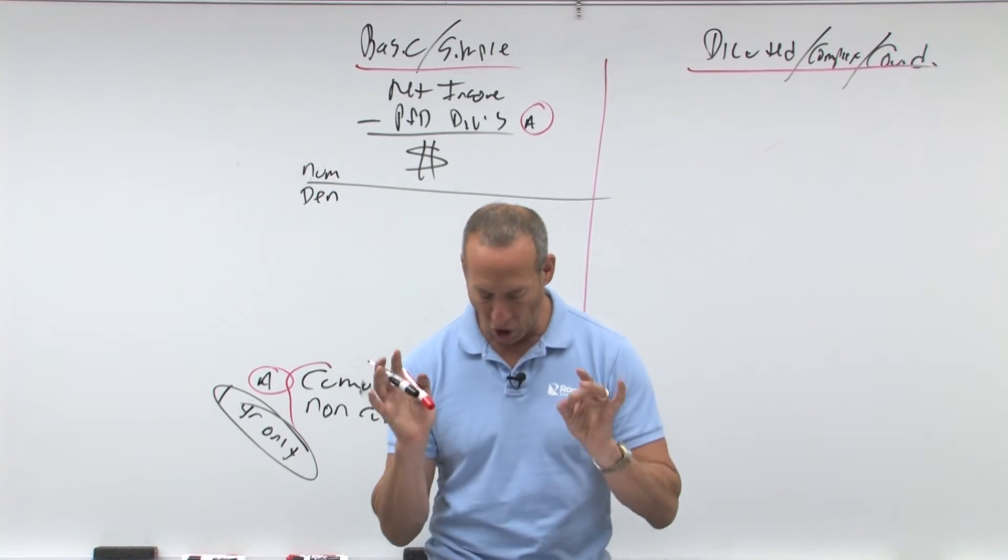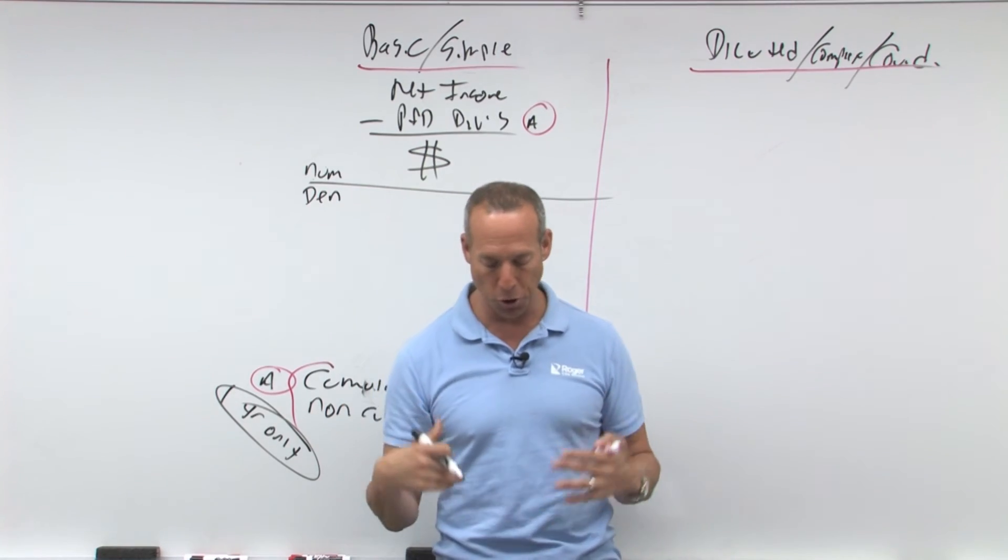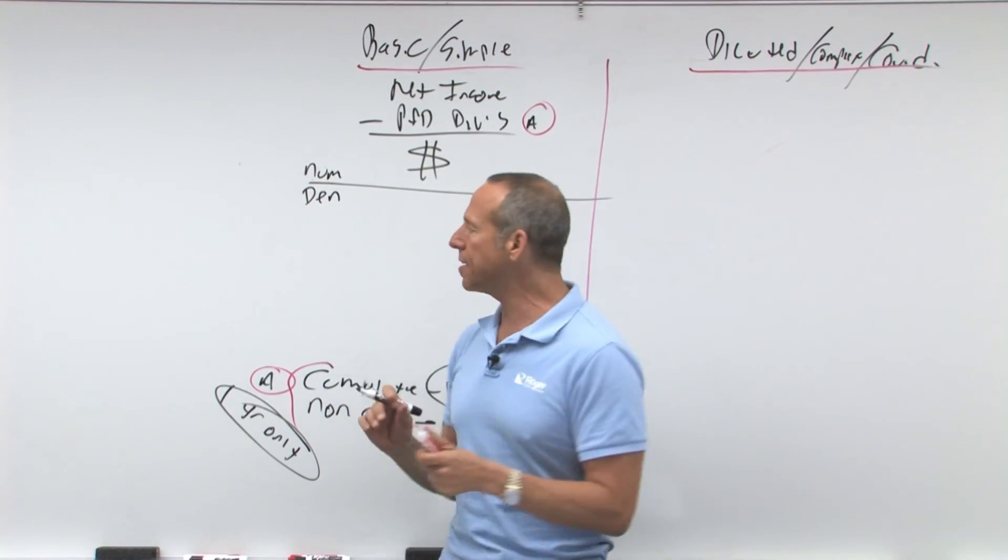So again, that's what they're saying as far as the top or the numerator, that's going to give you the money available to the shareholders. Now, what are we going to divide that with?